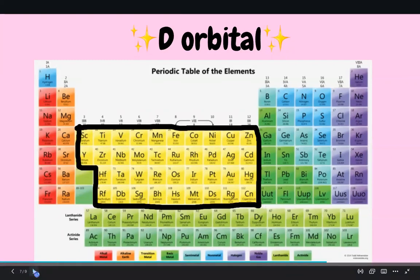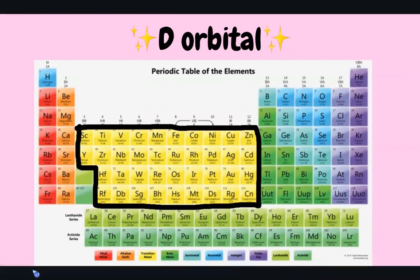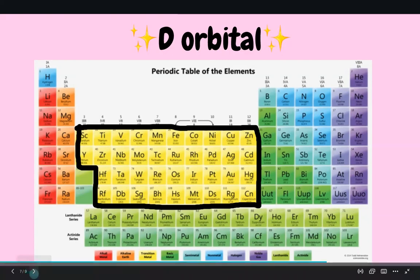Next, we have the D orbital or the D block. These elements are metallic in nature, which means they are metals, and they are very malleable, which means that they can be pressed into sheets, and ductile, which means they can be shaped into a wire. The elements in this group conduct heat and electricity very well, which is why they are used in many electronic appliances. Many metals that you may be familiar with, such as iron, copper, gold, silver, mercury, etc., can be found in this category of elements.